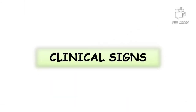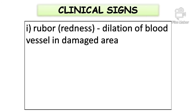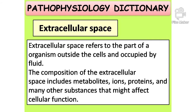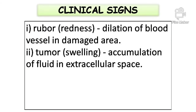Clinical signs of inflammation. Rubor means redness — dilation of blood vessels in the damaged area. Tumor means swelling — accumulation of fluid in extracellular space. The extracellular space refers to the part of an organism outside the cells and occupied by fluid. The composition of the extracellular space includes metabolites, ions, proteins, and many other substances that might affect cellular function.